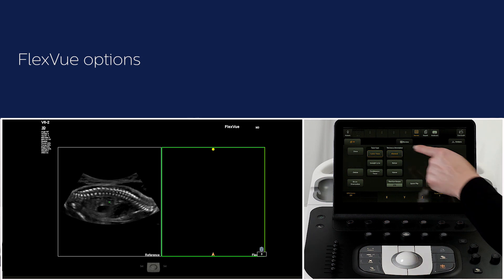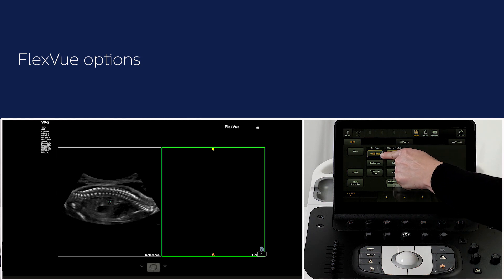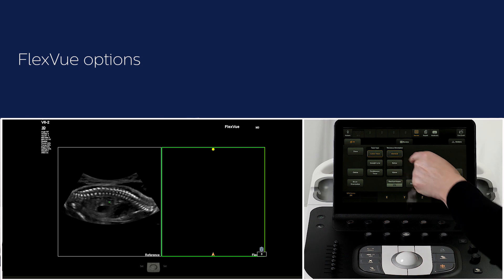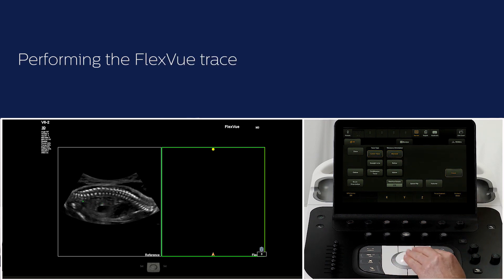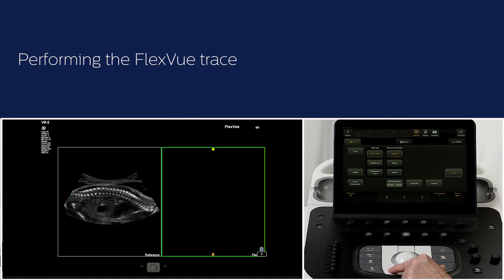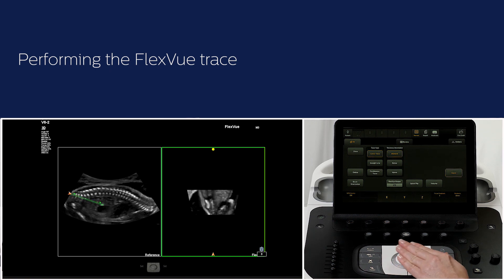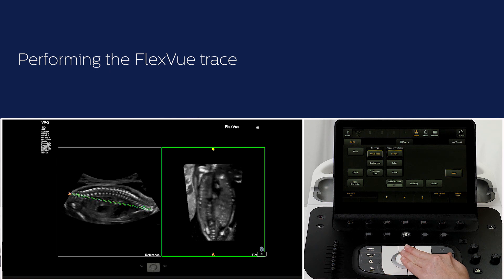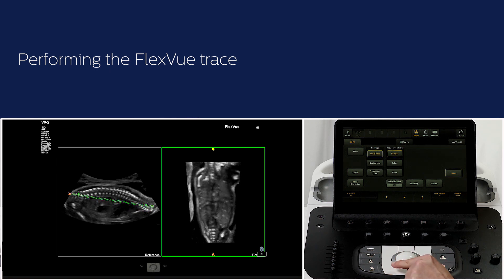We will select curve trace. Place the cursor where you want to start the trace line and press set by using either the right or left button next to the trackball. Use the trackball to draw the trace line and press the set button to place the end position of the trace.